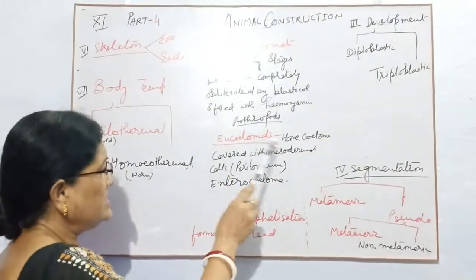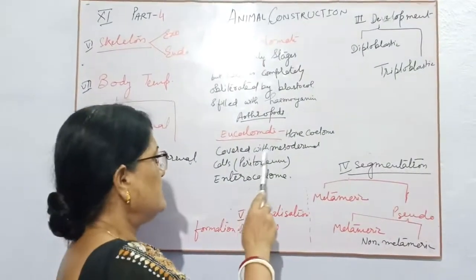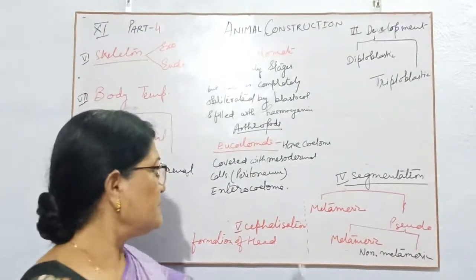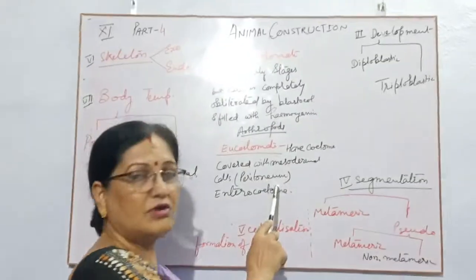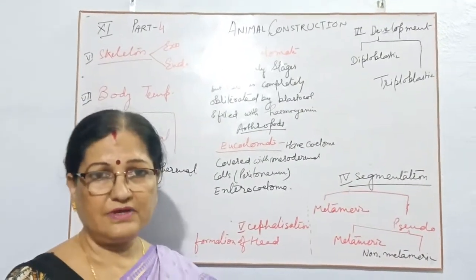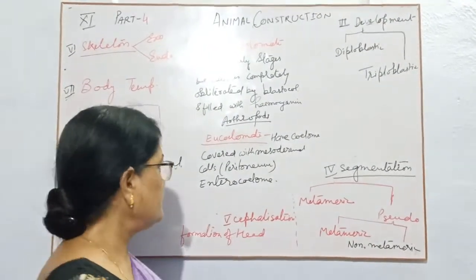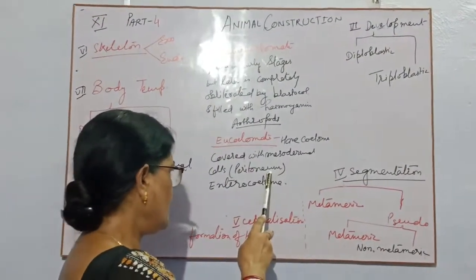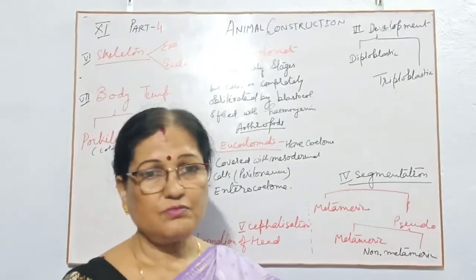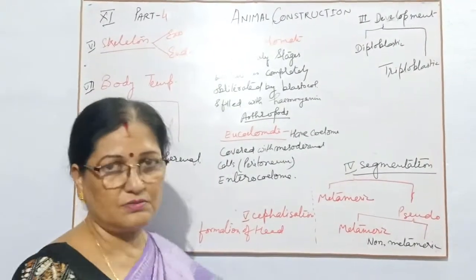Next, Eucoelom — it has a coelom which is covered with mesodermal cells. Mesodermal cells means mesoderm is fully developed, and these cells are called peritoneum. So those organisms have development with the ectoderm, endoderm, and mesoderm. Mesoderm is fully developed with the peritoneum wall, and they have a true body cavity, also termed as enterocoelom.